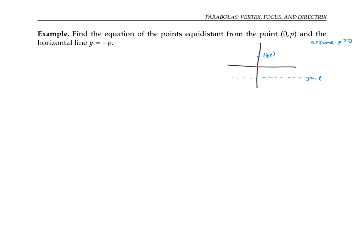Certainly the origin will be among those points, as it has a distance of p from the point and p from the line. But the other points on the x-axis will be closer to the line than they are to the point. So if I want the set of points that are the same distance from the point and the line, that's going to be a curve that curves upwards — something like this. A point out here will be the same distance from the point as it is from the line. Our intuition is suggesting that this set of points should be the shape of a parabola. Let's confirm this with some algebra.